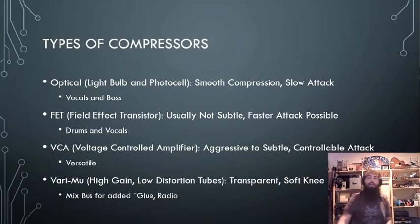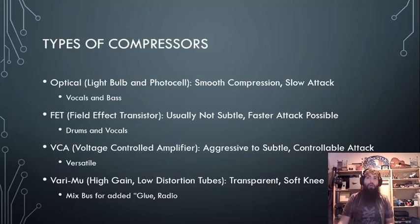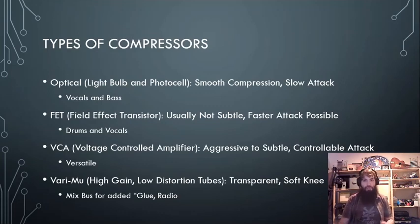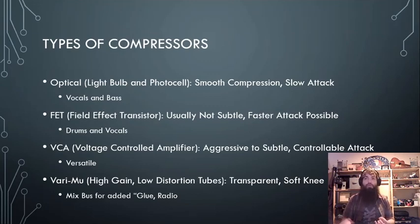There are different types of compressors — not all are created equal. Optical is an early compressor using a light bulb and a photo cell. The photo cell recognizes when the light bulb is lighting up, and the light bulb responds based on the signal level.